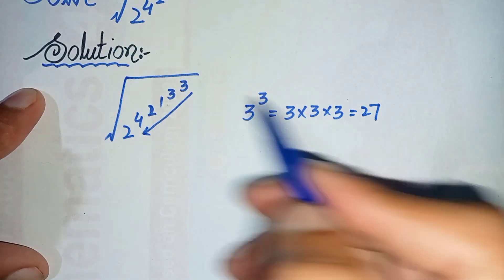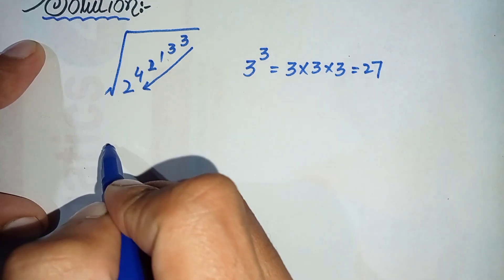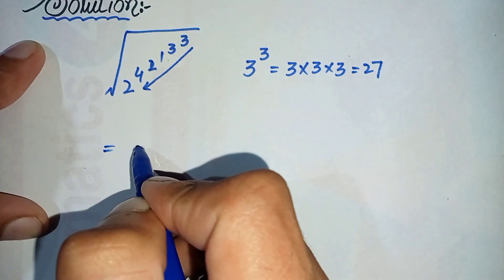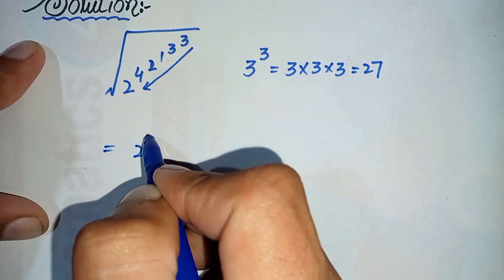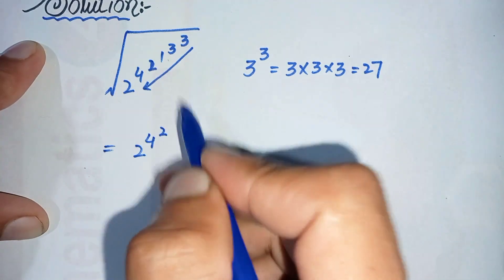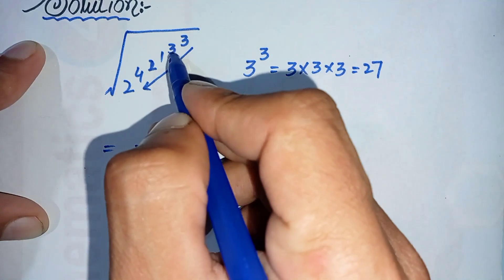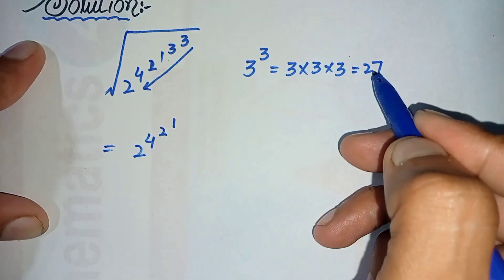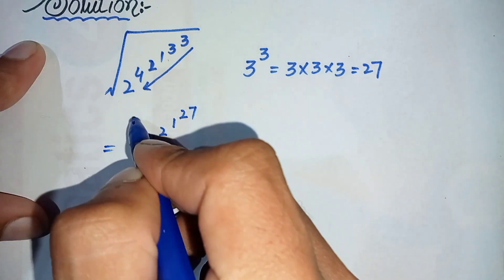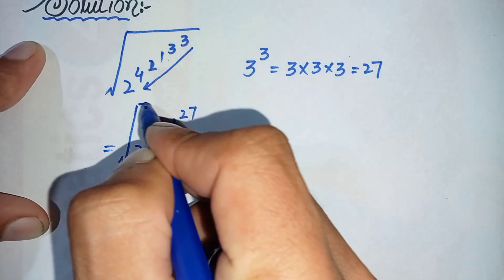In the next step, we will replace 3 raised to power 3 with 27. So this becomes equal to the square root of 2 raised to power 4, raised to power 2, raised to power 1, and 3 raised to power 3 is replaced by 27.